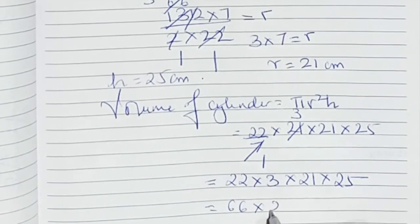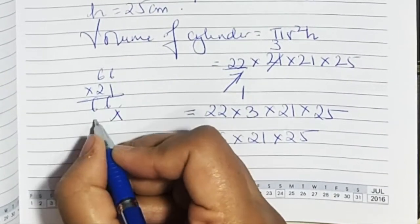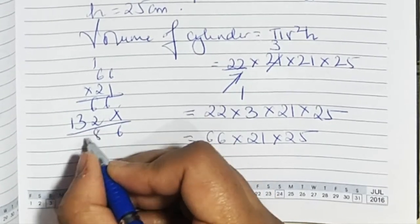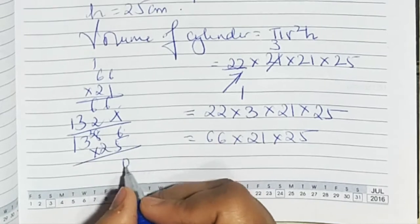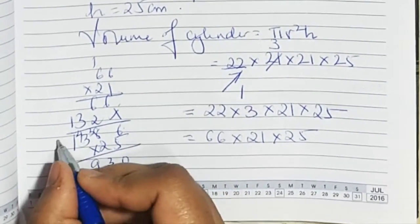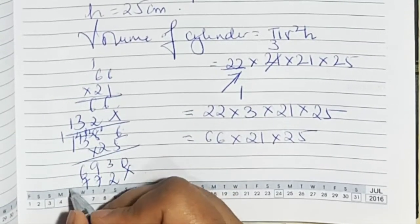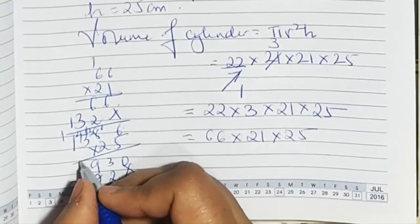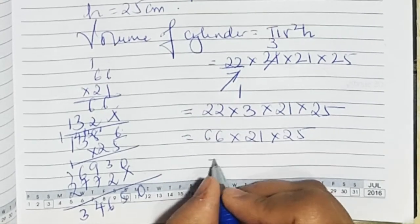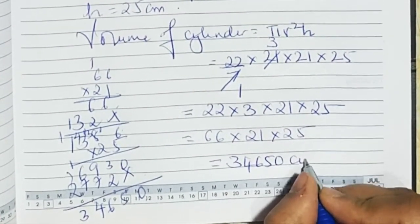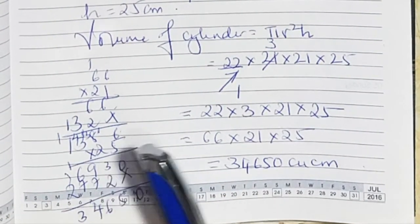Multiplying 22 into 3 gives 66, then 66 into 21 gives 1386, and 1386 into 25. Working through the multiplication step by step, the final answer is 34,650 cubic centimeters. So the volume of the cylinder is 34,650 cubic centimeters. And that's the end of the chapter.